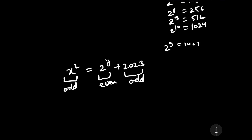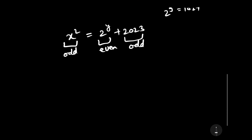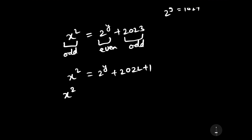From this observation, x is odd, 2^y is even, and 2023 is odd. Now let us solve further. If we rearrange x² = 2^y + 2023, we can write 2023 as 2022 + 1, giving us x² − 1 = 2^y + 2022.